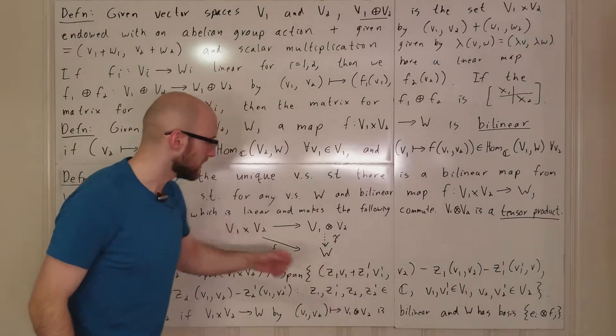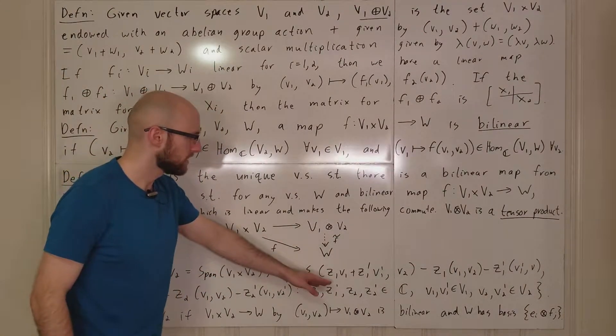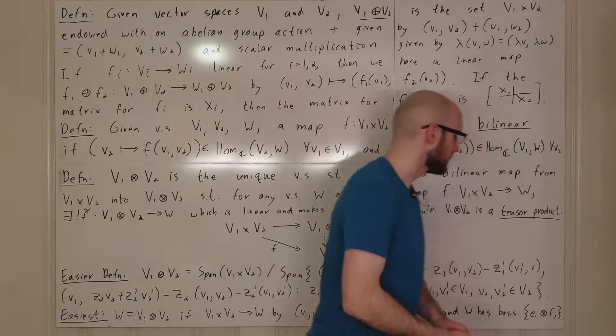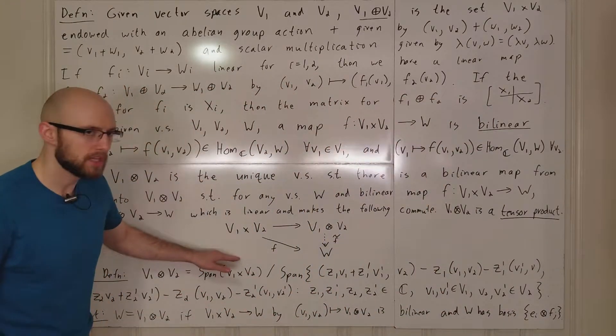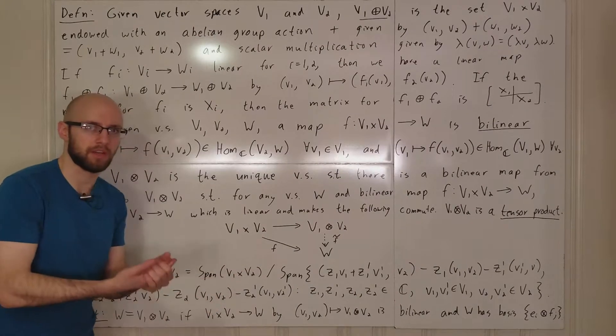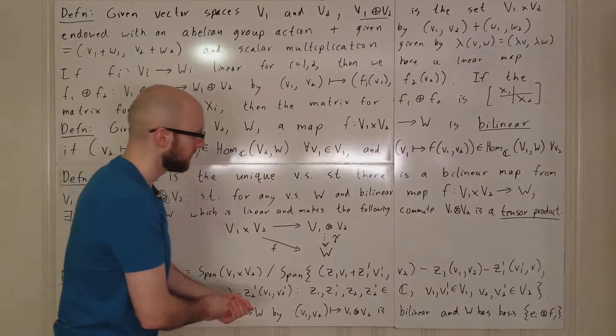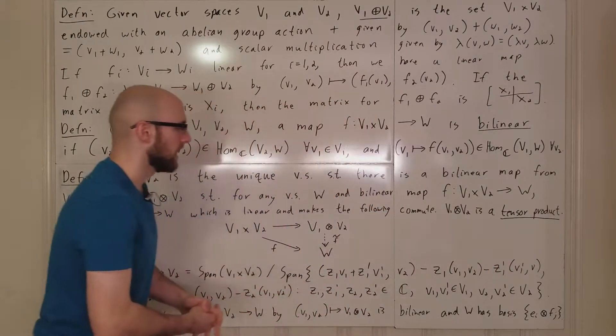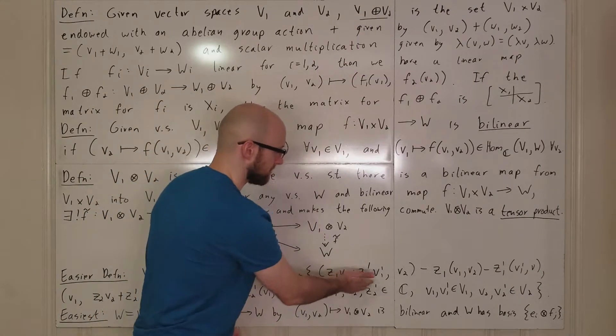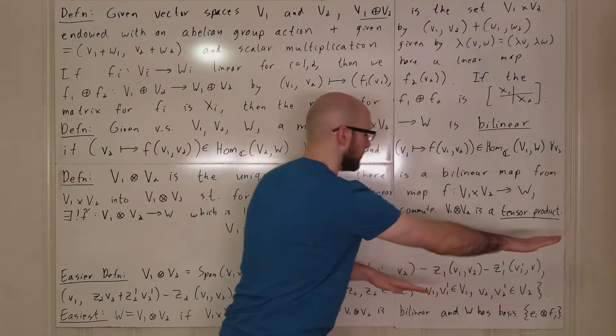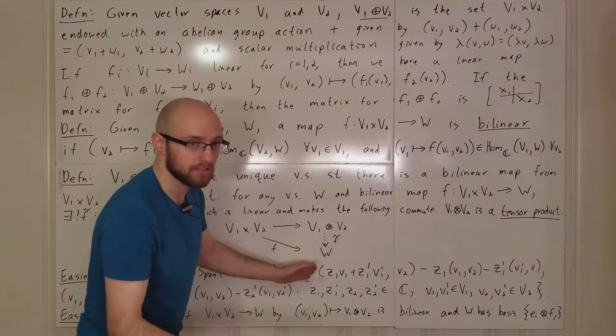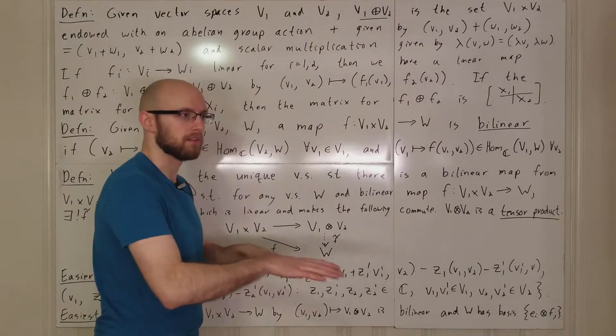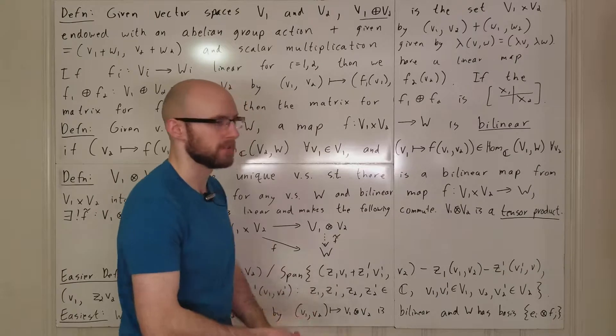Because if you look at this, what is this saying? So in this space, if we're quotienting by this minus this minus this, then you have two things in this quotient space being equivalent if this thing equals zero. And so if you write it as this minus this minus this equals zero, and you bring these two things over to the other side, what it literally tells you is these two things are equivalent if they satisfy the linearity condition in the first coordinate.